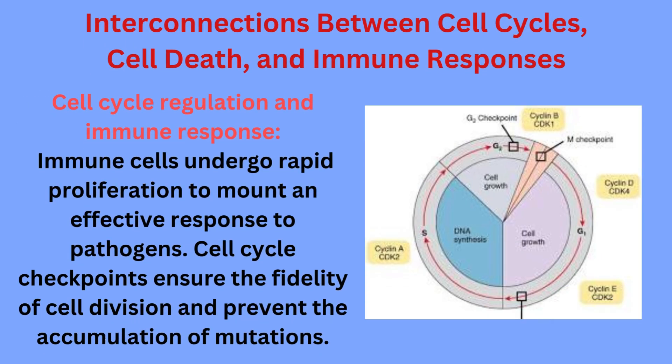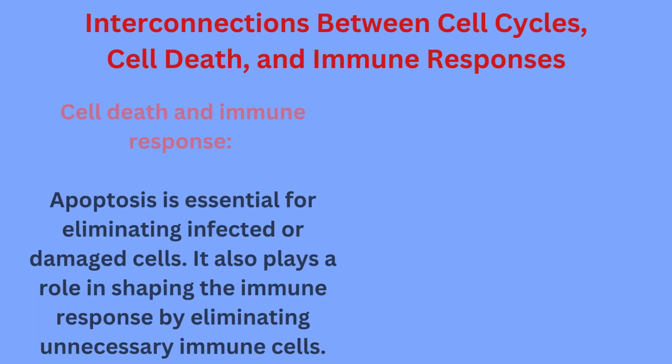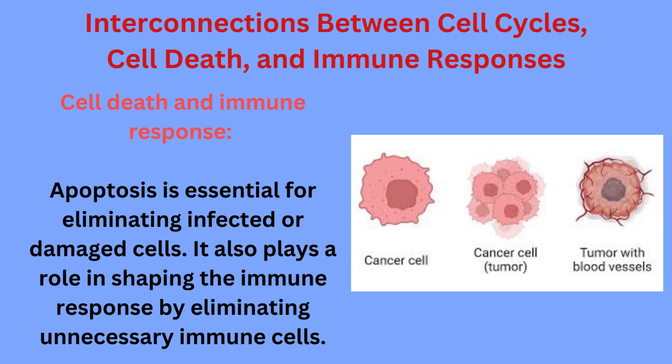Interconnections between cell cycles, cell death, and immune responses. These three processes are intricately linked. Immune cells undergo rapid proliferation to mount an effective response to pathogens, and cell cycle checkpoints ensure the fidelity of cell division and prevent the accumulation of mutations. Apoptosis is essential for eliminating infected or damaged cells, and also plays a role in shaping the immune response by eliminating unnecessary immune cells.